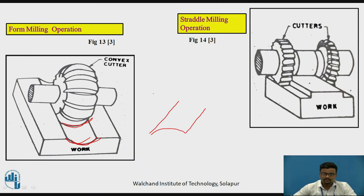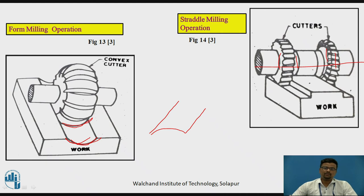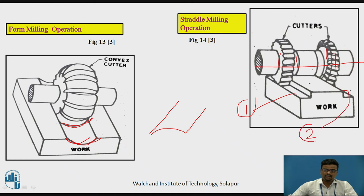In the straddle milling operation, you want to provide milling on both sides of the workpiece. Two milling cutters are fixed on the spindle with the help of collars, enabling two milling operations simultaneously on two surfaces of the workpiece. This is the advantage of straddle milling — you can mount two milling cutters on the spindle or arbor.